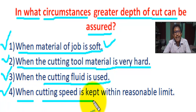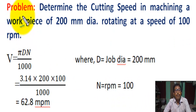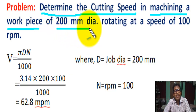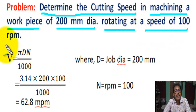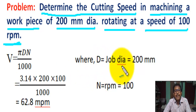Now we solve a problem. Problem: determine the cutting speed in machining a workpiece — a job of 200 millimeter diameter rotating at a speed of 100 RPM. We know the formula of cutting speed: V = πDN / 1000, where D equals diameter of job in millimeters and N equals RPM of the job.